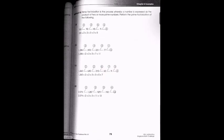Prime factorization is the process where a number is expressed as the product of two or more prime numbers. For example, if we have a number like ten, we can express that as five times two, and since five and two are both prime numbers, we stop there.